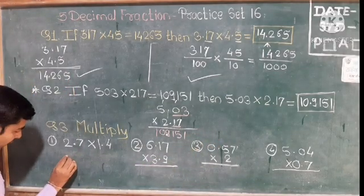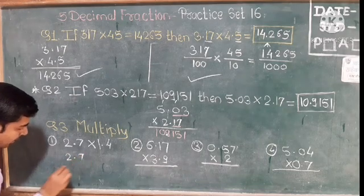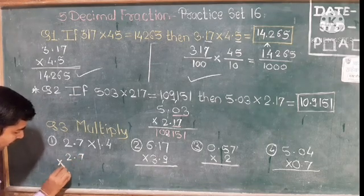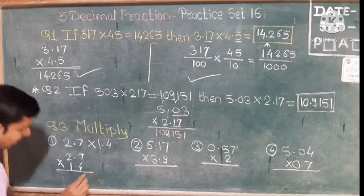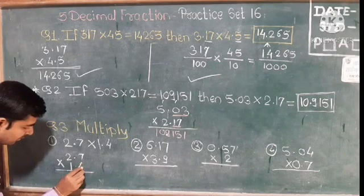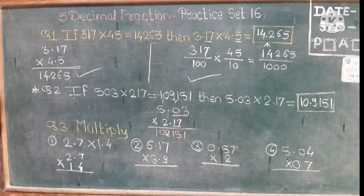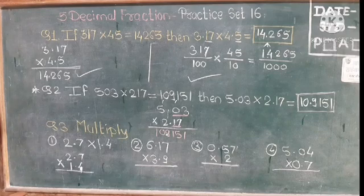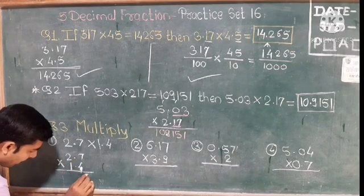Okay, R2. The second problem: 22.7 multiplied by 1.4, multiplied by 4. Multiply: 14, 98, carry over 9. 14.